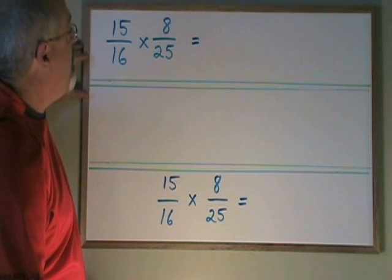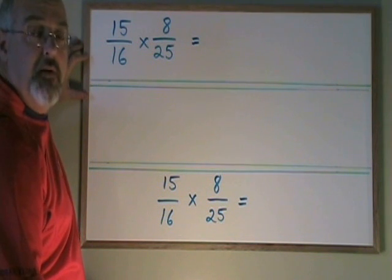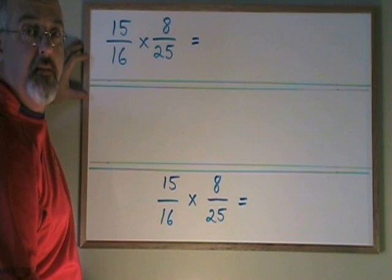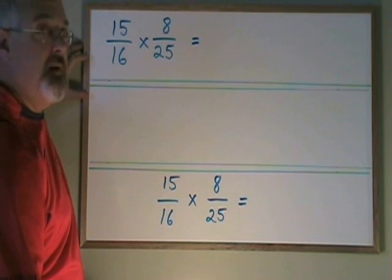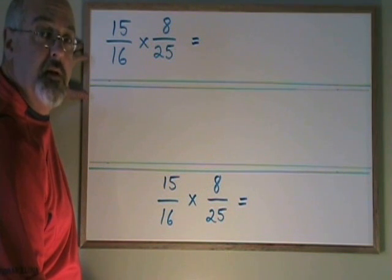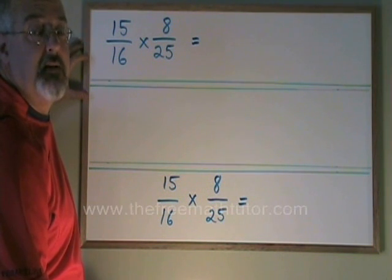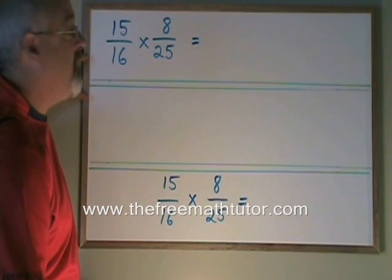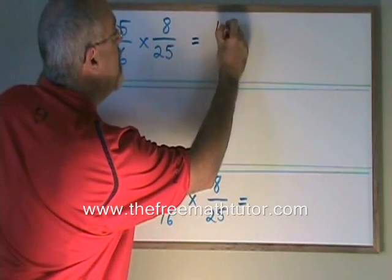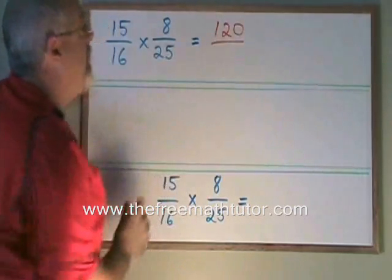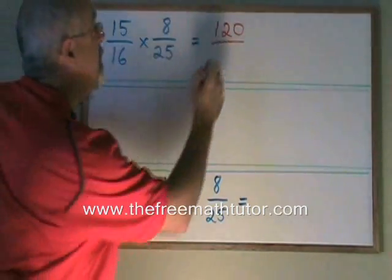We can solve this by multiplying the top by the top and the bottom by the bottom in the way we usually do when we multiply fractions. The numbers are rather large and that can make it a little confusing and a little easier to make mistakes. But if we're careful, we'll get the right answer. 15 times 8 is equal to 120, and 16 times 25 is equal to 400.